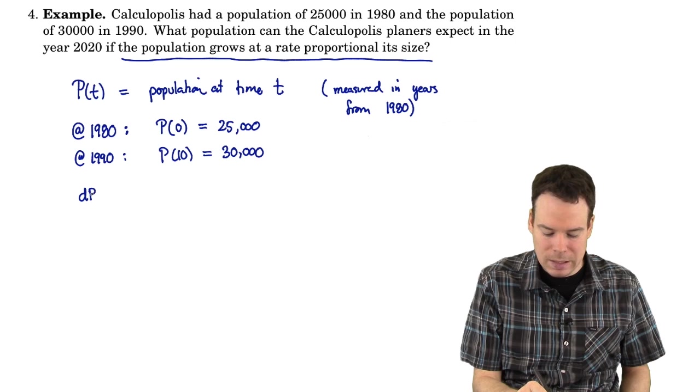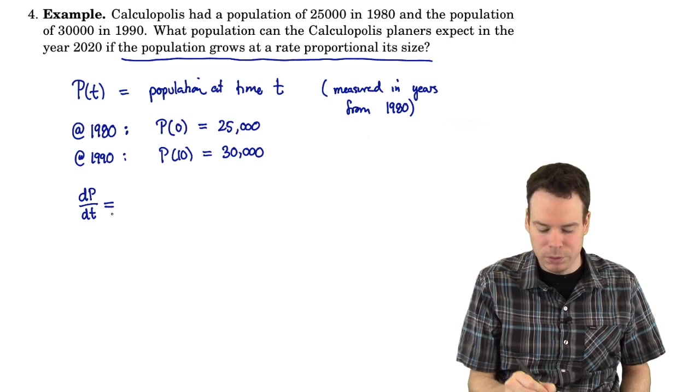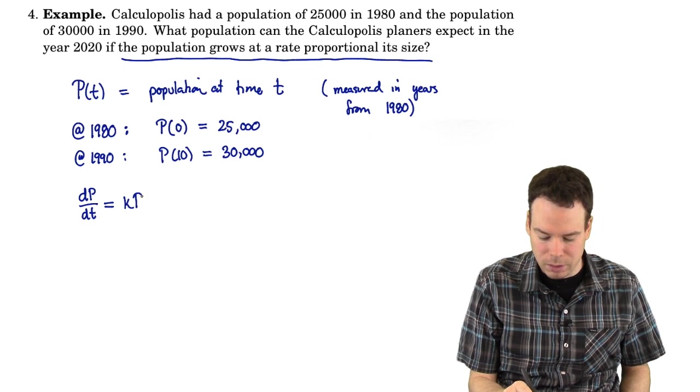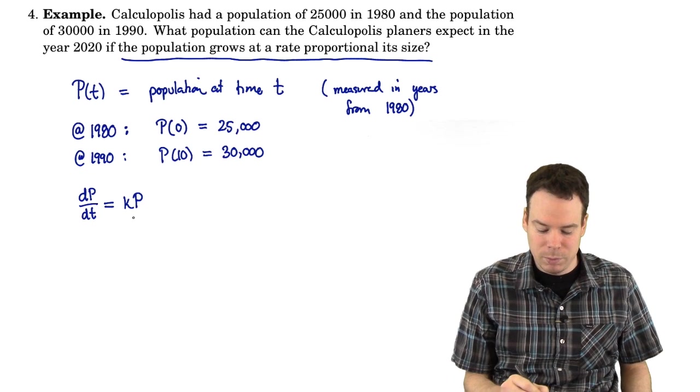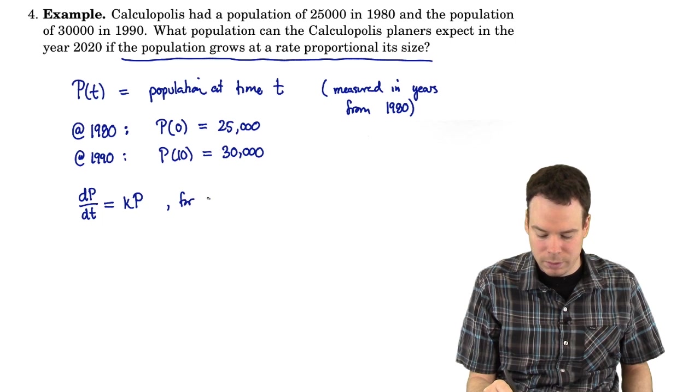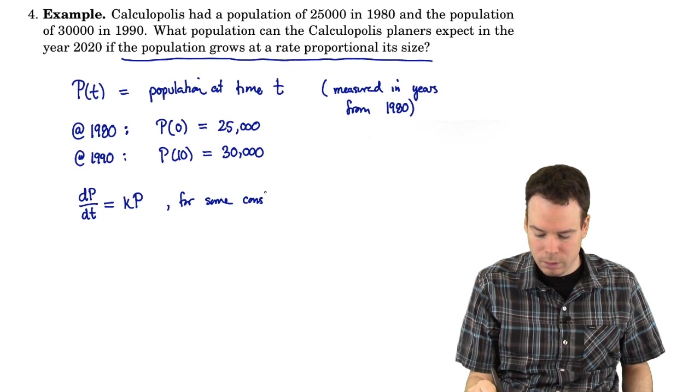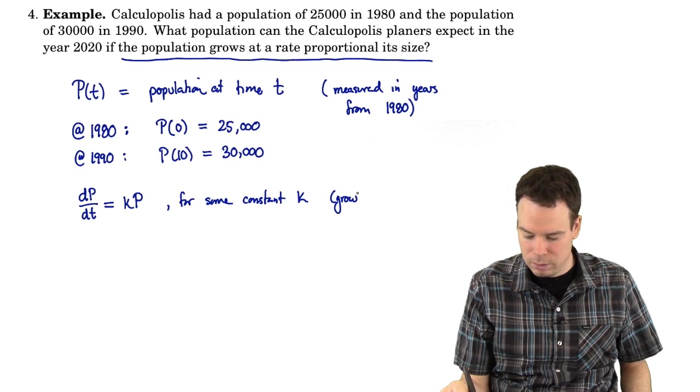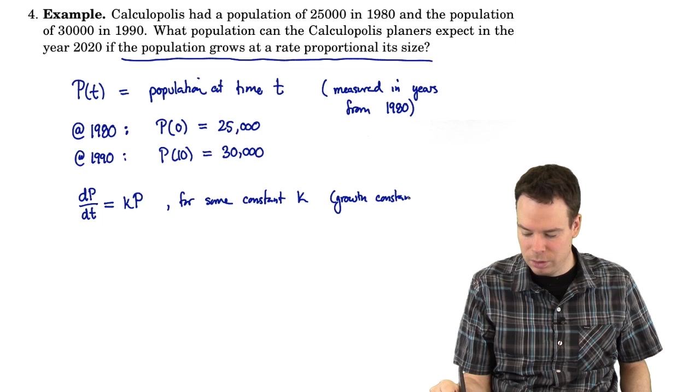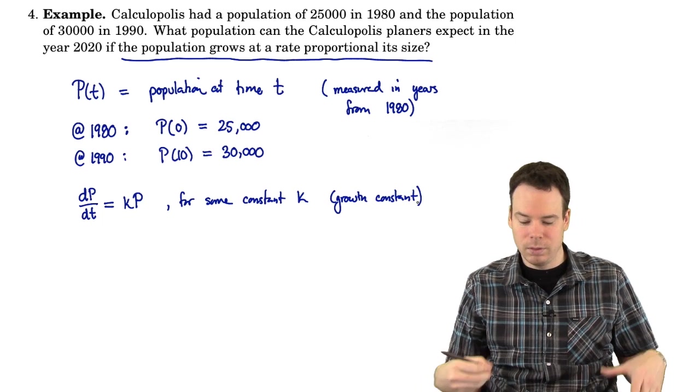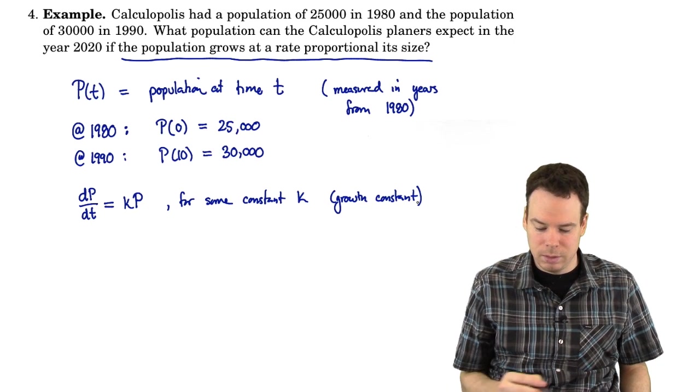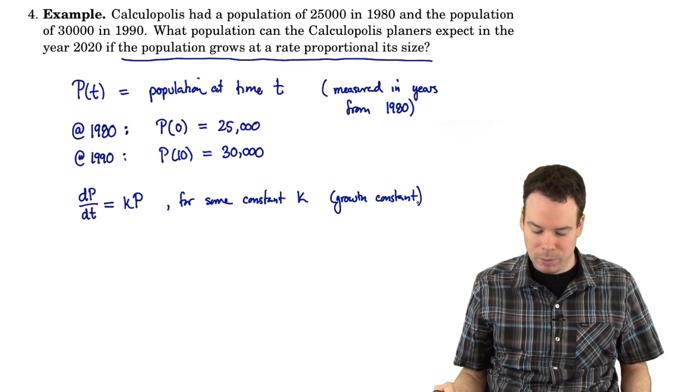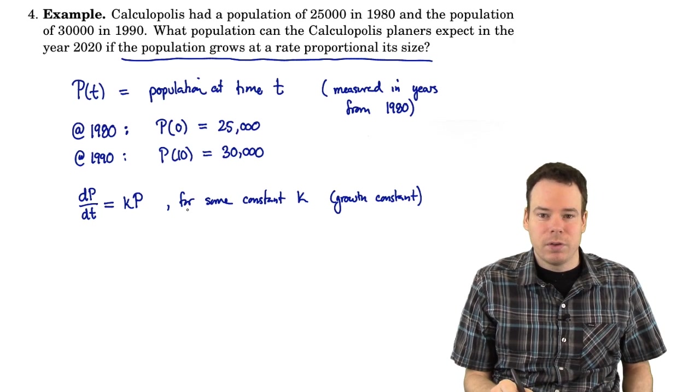We know that the population grows at a rate proportional to its size. So we know that dP/dt is equal to a multiple of itself. It's proportional to itself. So there's some constant K times P. So this is for some constant K, typically called the growth constant. And it depends on the situation that you're looking at as to what this value is. Here we're looking at population growth in this city of Calculopolis, so we need to now figure out what the corresponding K value is for this population. So here's our differential equation.